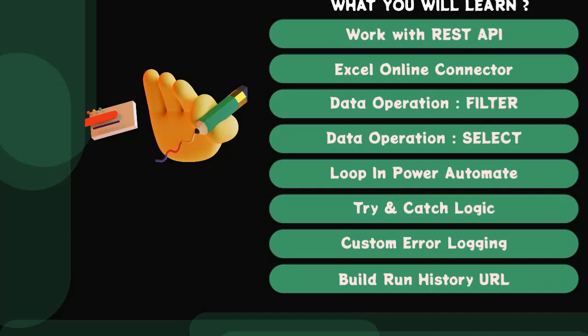Without wasting much more time, let's start this topic. In this topic we are going to learn about how to do custom error logging in Power Automate, as it is one of the important requirements whenever you are working with a Power Automate project. Power Automate run history will vanish after 28 days, but in some scenarios we need the run history for audit purposes, and that is the reason we require a custom error logging mechanism.